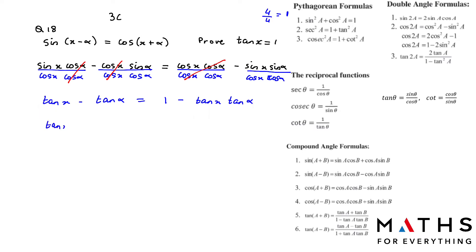When you do, the sign will change — it's going to become positive tan x. Tan alpha is equal to 1. And this tan alpha, when you shift, it's going to become positive tan alpha. Factorize the tan x out. Many of you fear the word factorize, but it's not difficult.